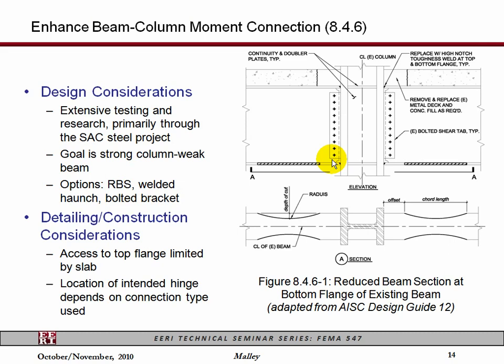There are a couple of connection details in the document on how to upgrade or enhance a moment connection in fairly simple ways, basically taken from the AISC design guide. AISC sponsored some research after the Northridge earthquake along with NIST on looking at some retrofit details. The first approach here is a combination of removing the existing weld material at the top flange and replacing it with new notch-tough weld material, and at the bottom flange providing a reduced beam section cut to reduce demands in that area as well as removing that weld material.